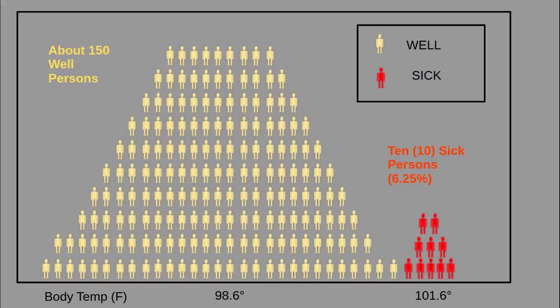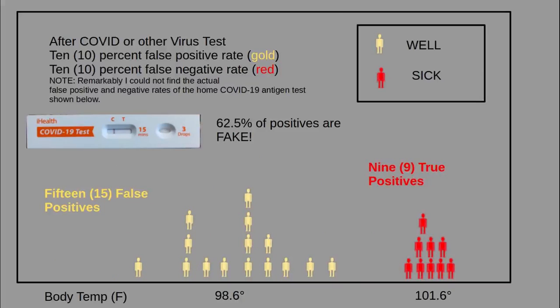What happens if we test the people and ignore the symptoms? Our hypothetical test has a false positive rate of 10%, meaning 1 in 10 well, healthy persons will test positive. The false negative rate is also 10%, meaning 1 in 10 sick people will test negative.